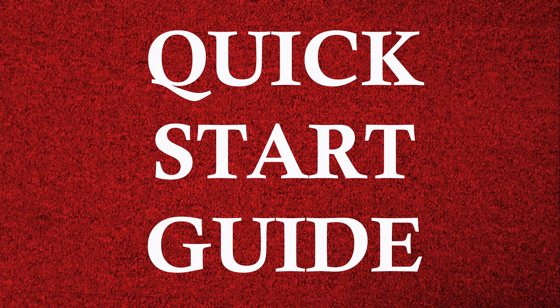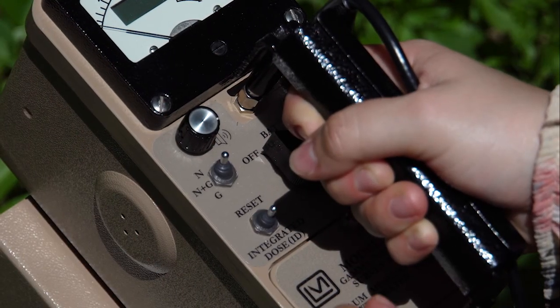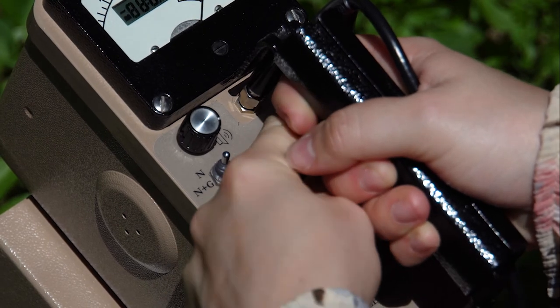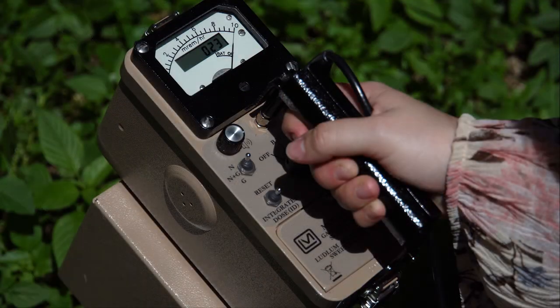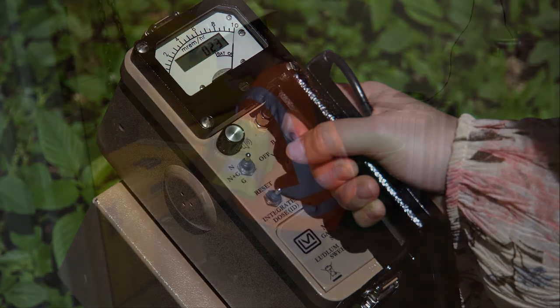Quick Start Guide: Rotate the range switch to the BAT position. The meter pointer should deflect above the left vertical mark on the BAT OK line. If not, replace the batteries and repeat the test. After passing the battery test, the instrument is ready for use.